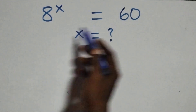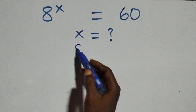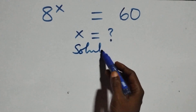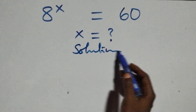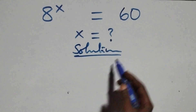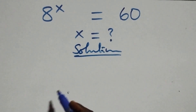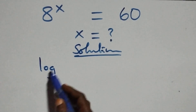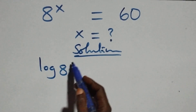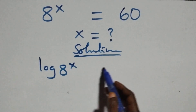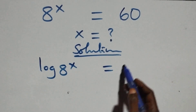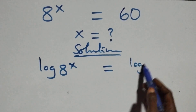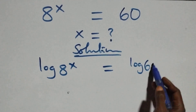How to solve this nice exponential equation. And what we have here, we take the log on both sides. At this here we have log a raised to the power x equals to log 60.